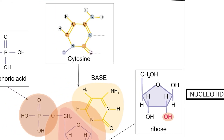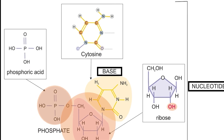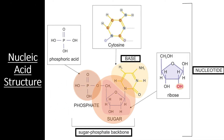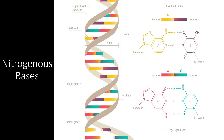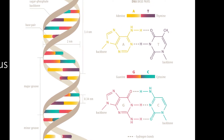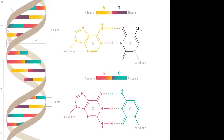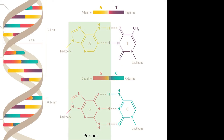The part of a nucleotide most important to carrying information is the nucleotide base. The base shown here is cytosine, though it is just one of five different nucleotide bases. There are five nitrogenous bases used in nature to create DNA and RNA, separated into two groups based on their structure. The purines are based on a double-ring structure, whereas the pyrimidines are based on a single-ring structure.